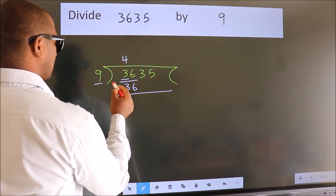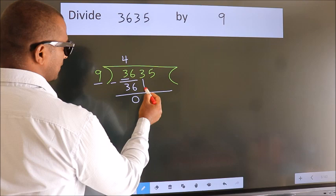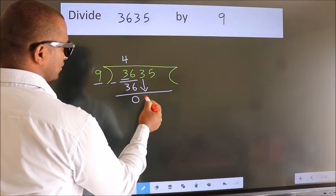Now we should subtract. We get 0. After this, bring down the beside number. So 3 down.